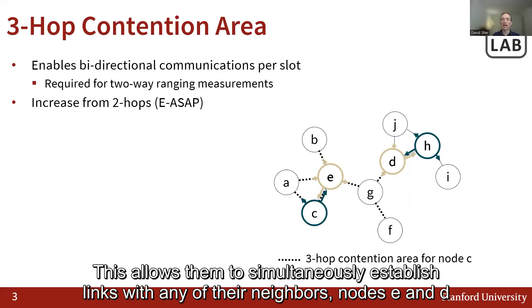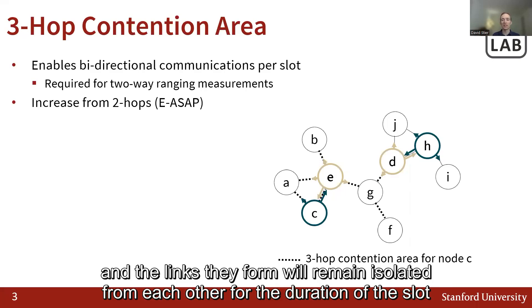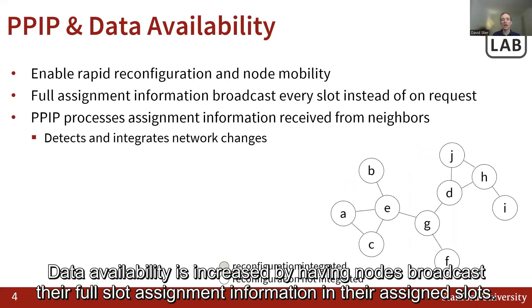This allows them to simultaneously establish links with any of their neighbors, such as nodes E and D, and the links they form will remain isolated from each other for the duration of the slot.